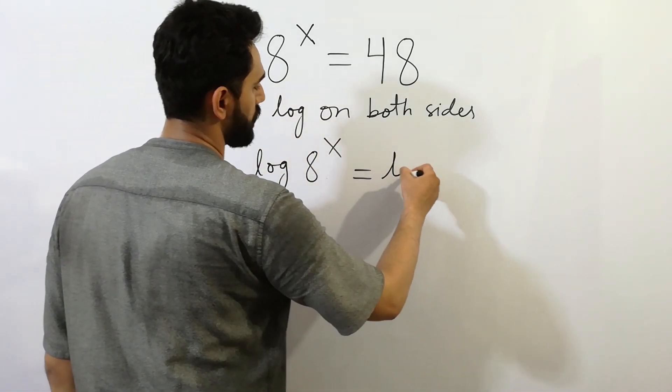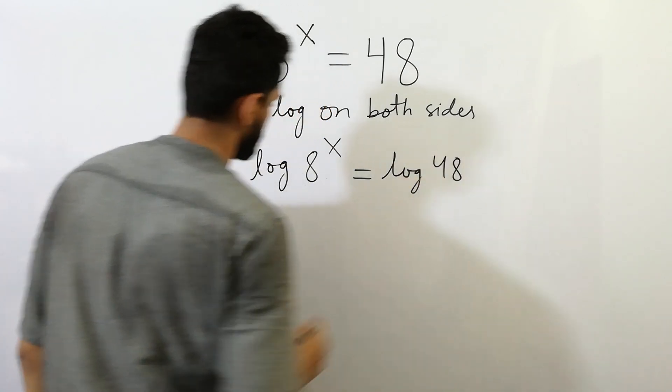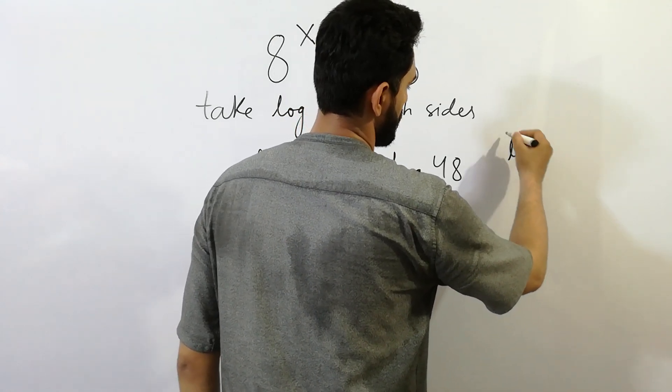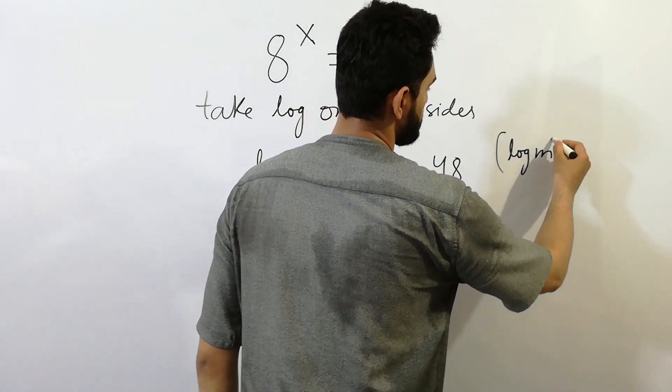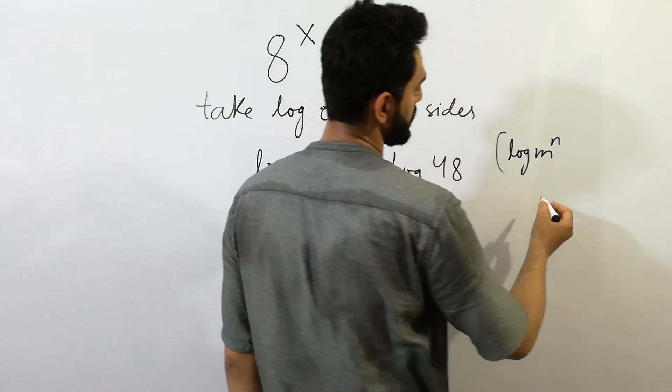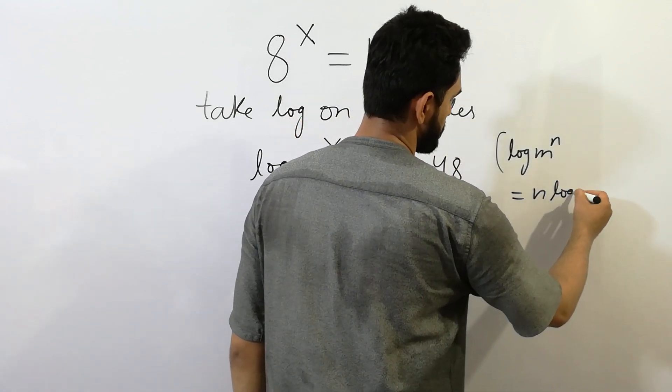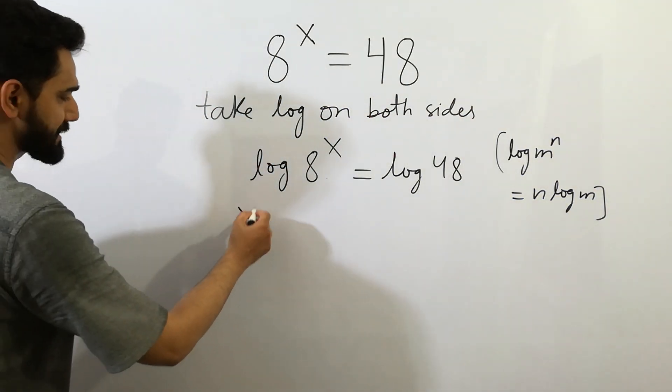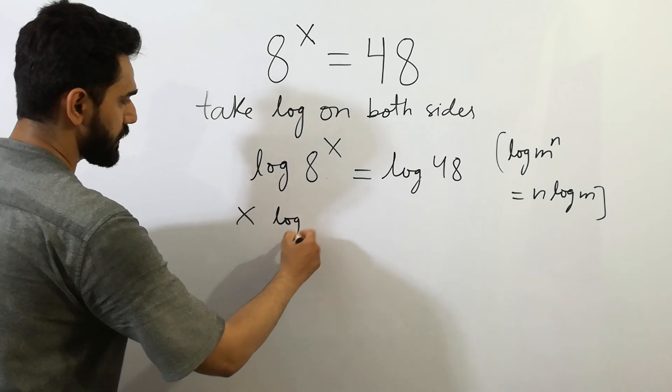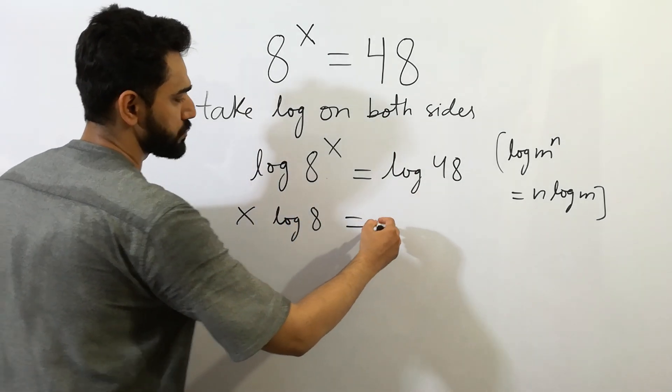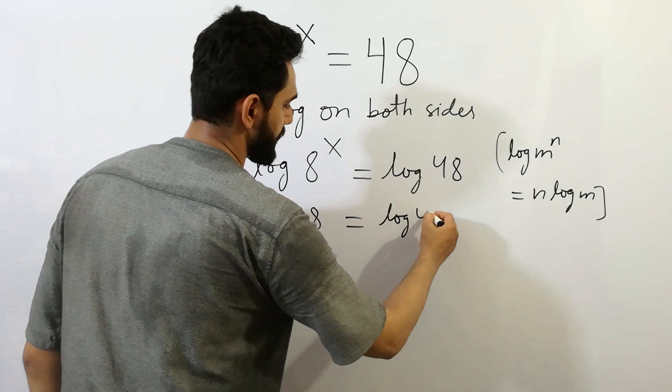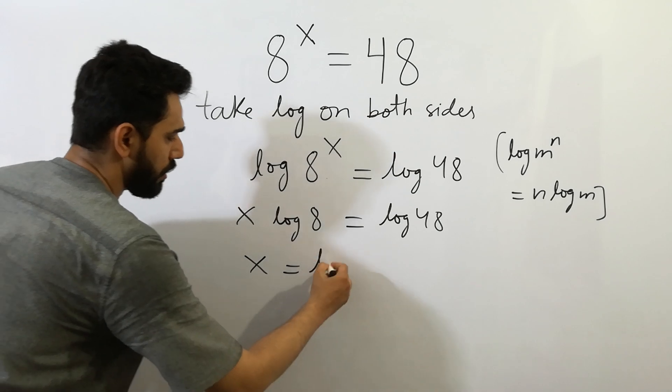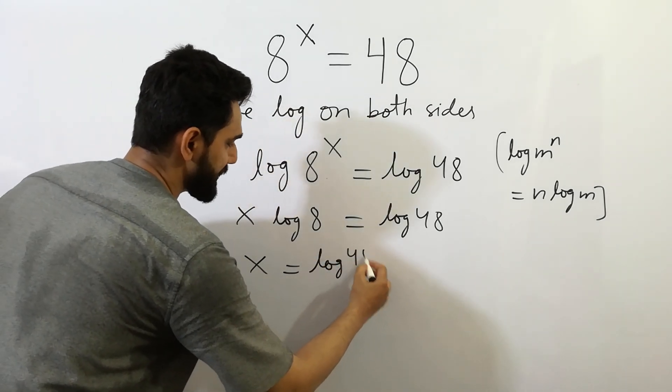As we know that log m to the power n is equal to n log m, so we can write x log 8 is equal to log 48. And x is equal to log 48 divided by log 8.